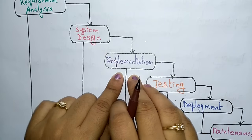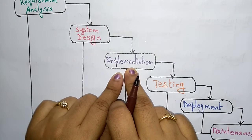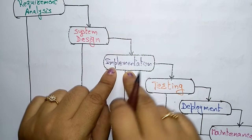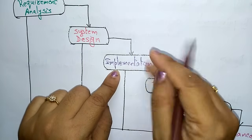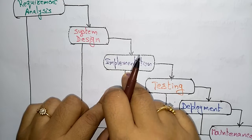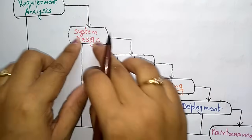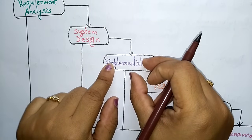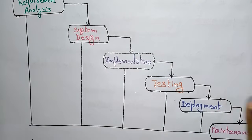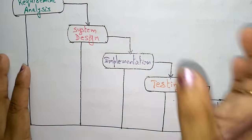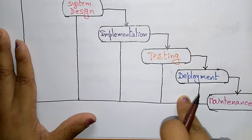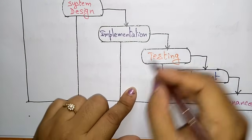Next comes implementation. Using input from system design, the system is developed in small programs called units. Each unit is tested for its functionality — this is referred to as unit testing. We write code and test each unit using unit testing. Once all small program units are tested and successful, the product moves on to the next phase.